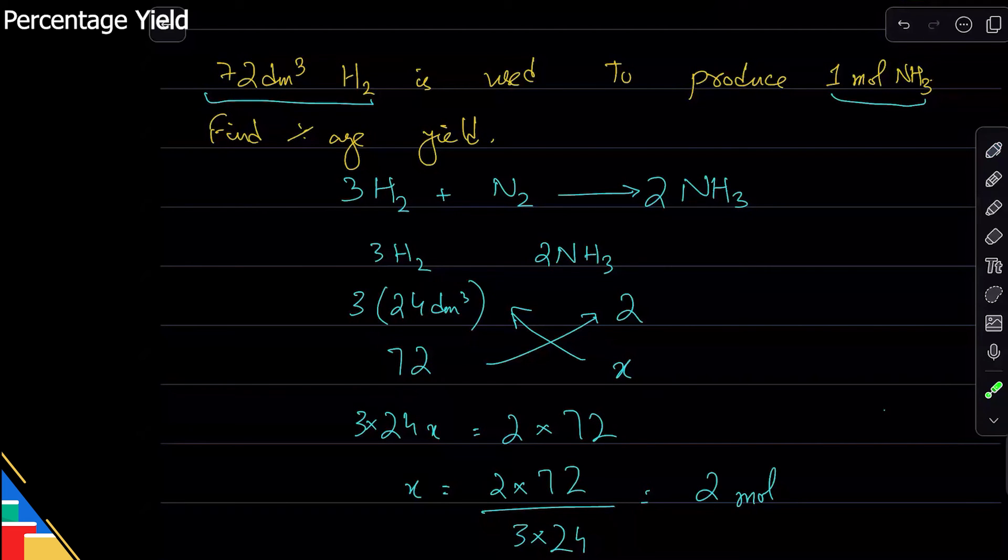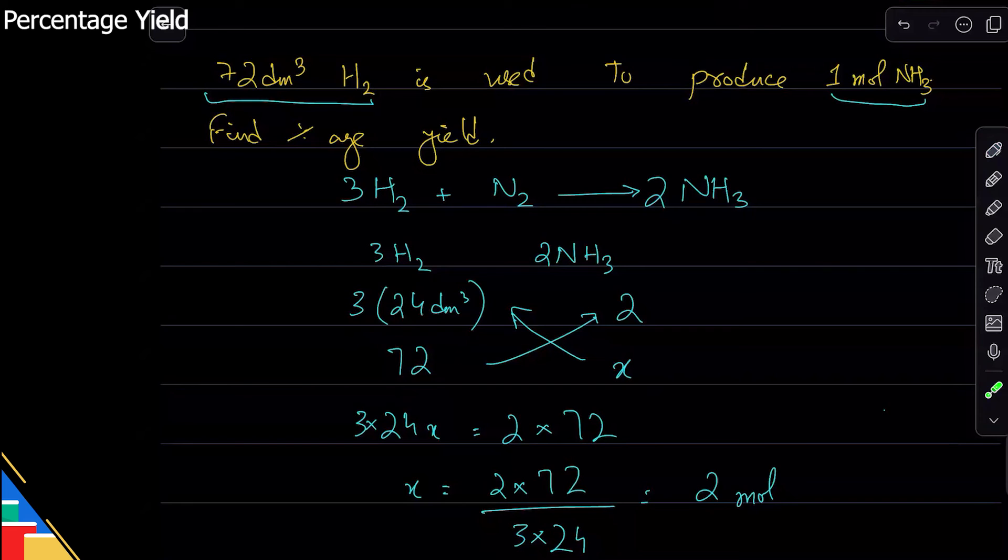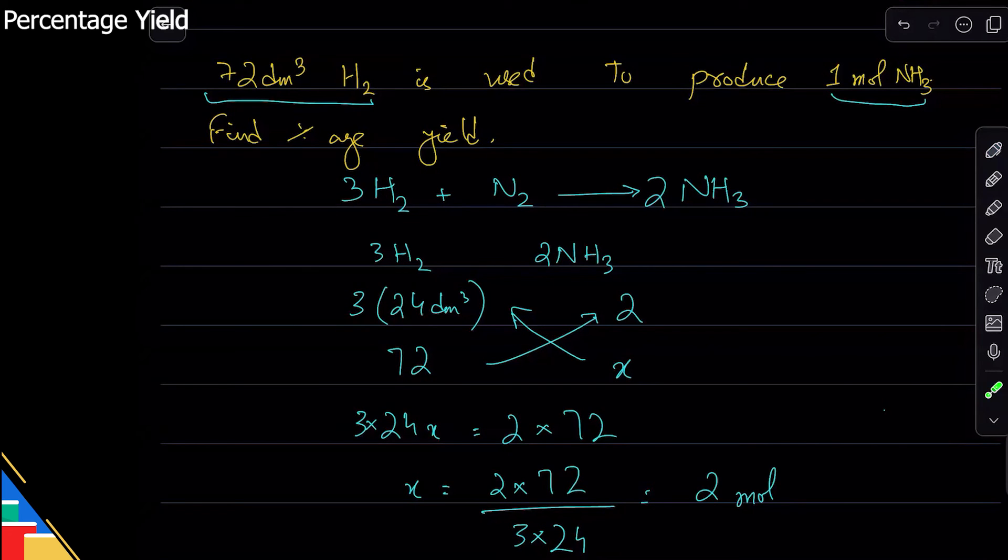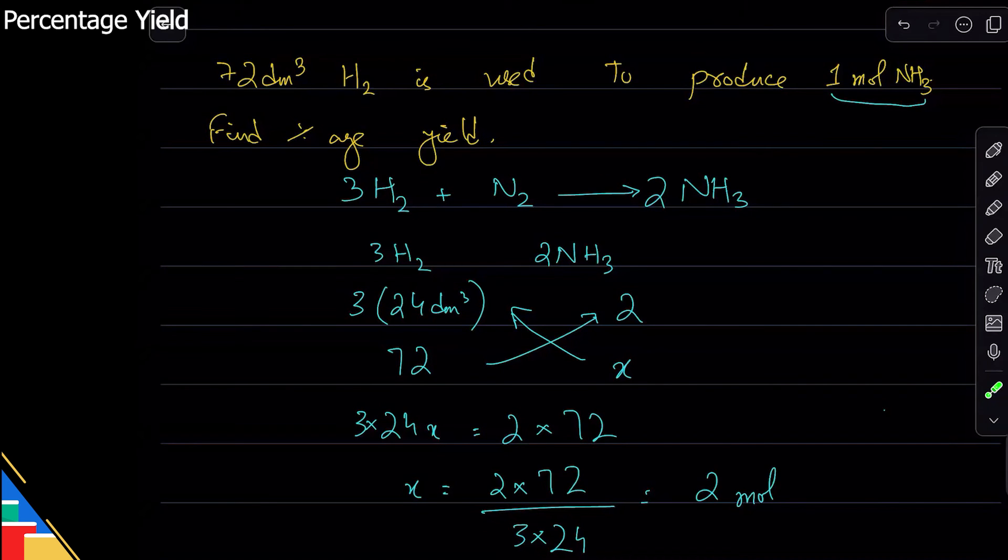Student asks about the calculation: why is three times 24 written for hydrogen but ammonia is written directly? The reason is that hydrogen has a volume of 24 dm³ per mole, so we write three times 24. Ammonia is one mole equals one mole, so it doesn't need to be written. But if you're not comfortable with it, you can write it. If you don't write 24, then you're working with simply moles, and you'll answer in moles.